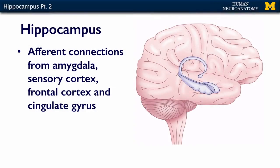The afferent connections of the hippocampus — the information it receives — come from the amygdala, all parts of the sensory cortex, the cingulate gyrus on the medial surface of the brain, and the frontal cortex. So almost every place sends information to the hippocampus.